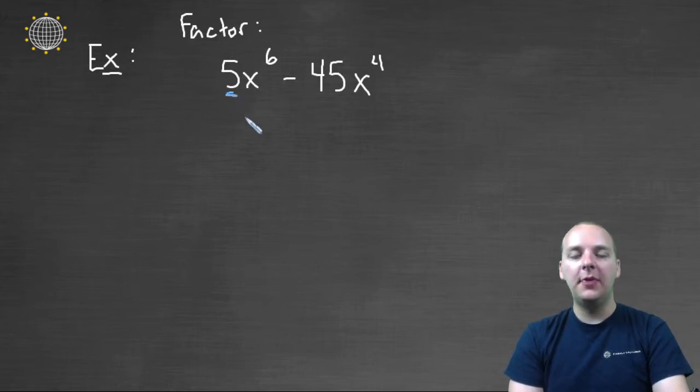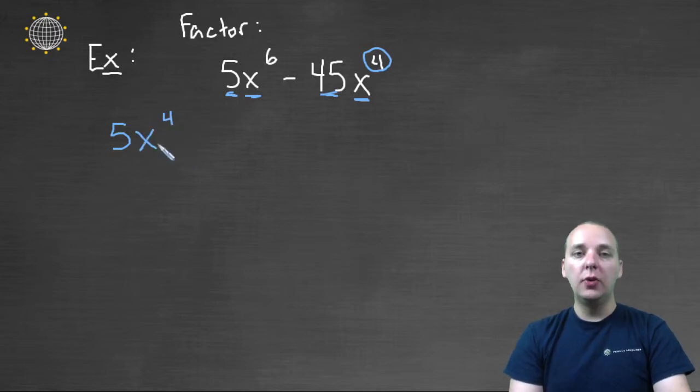I see a common factor of five, and between x to the sixth and x to the fourth, you can pull out an x to the fourth. You can pull out whatever the smallest degree is. So let's factor out a five x to the fourth. That's the greatest common factor between these two terms.